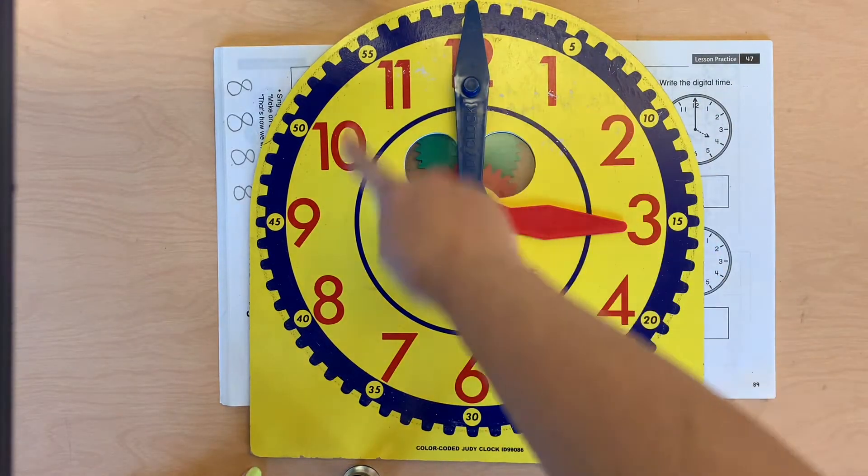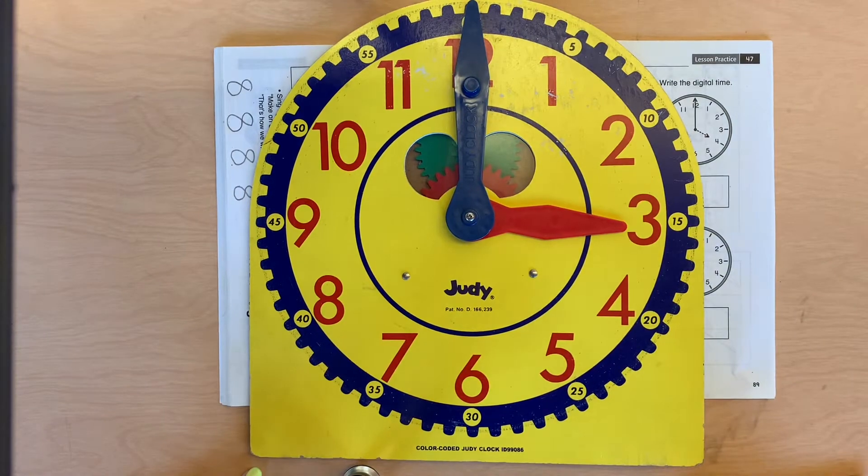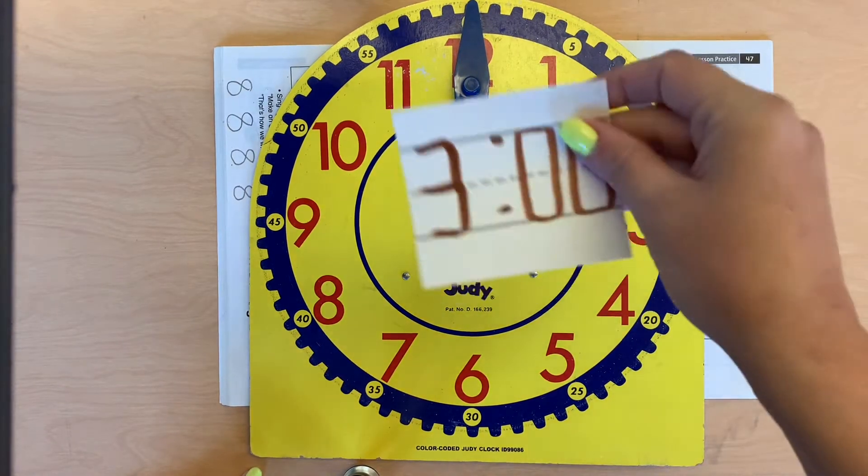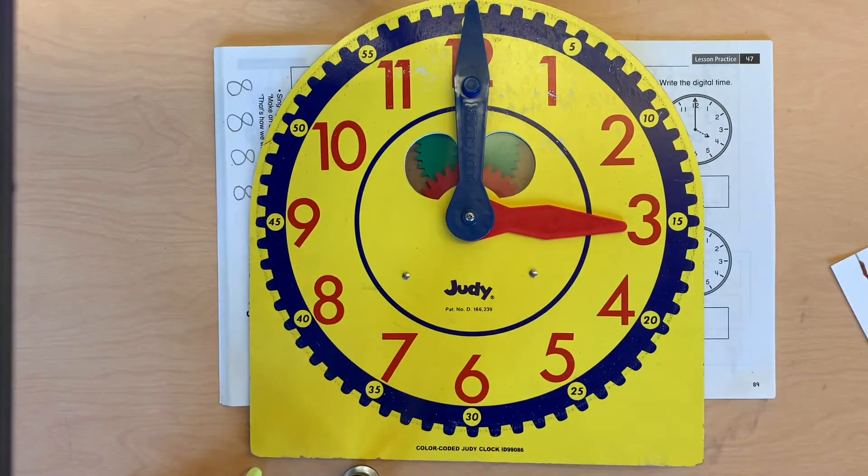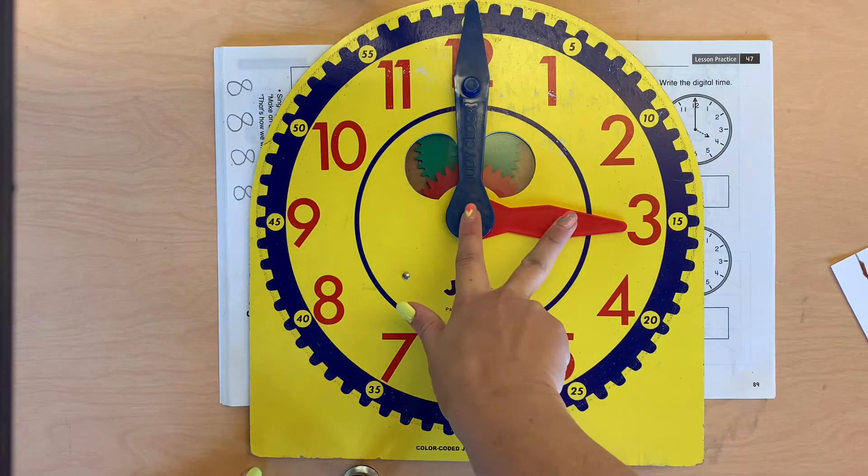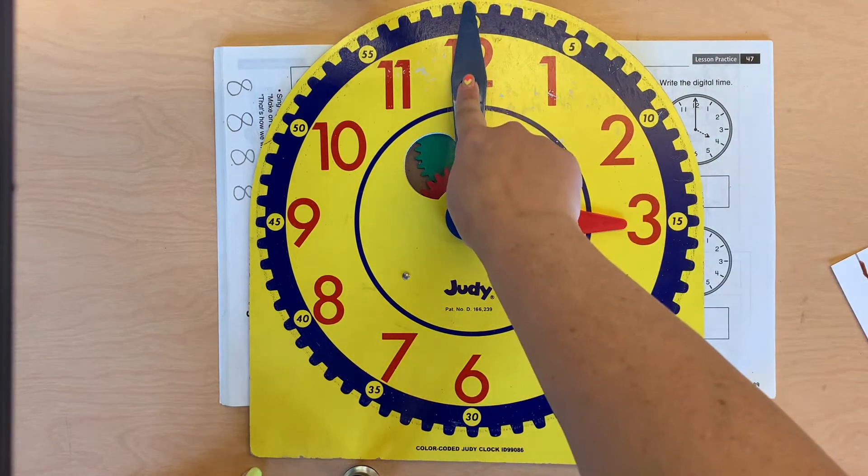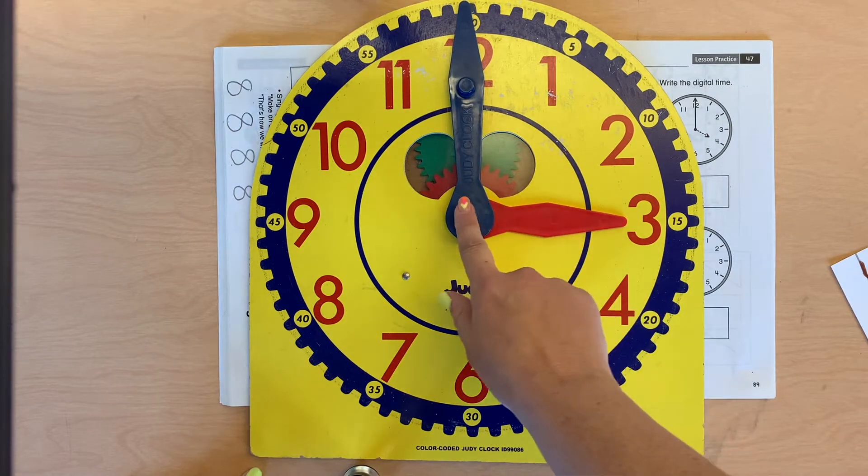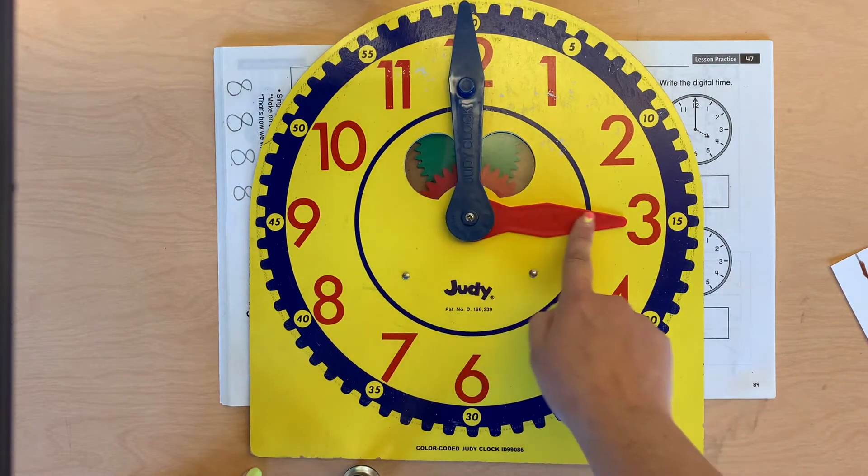These are usually on the wall, hanging on a wall somewhere, or on a watch, too. You can also have a watch that's a digital time. We've got two hands. We've got the minute hand, we've got the hour hand. The minute hand is long, the hour hand is short.